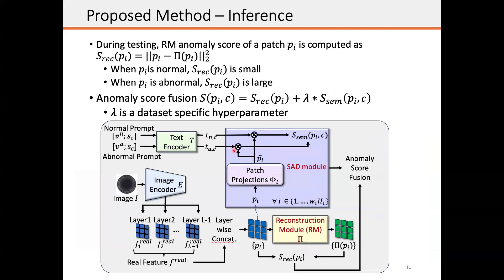During test time, we drop the decoder in phase one. Given an image, we first extract the feature and pass it to the reconstruction module to get the reconstruction output. The reconstruction anomaly score of a patch PI is the reconstruction difference, so when the patch is normal, the anomaly score is small. The patch is also passed to the semantic AD module to measure the semantic anomaly score. Since we have the anomaly score from the semantic AD module and the reconstruction module, we then fuse these scores to get the final anomaly score.